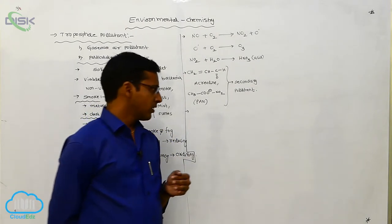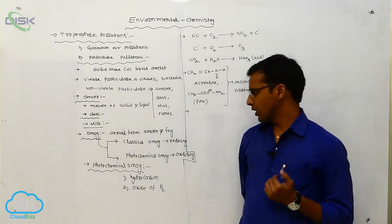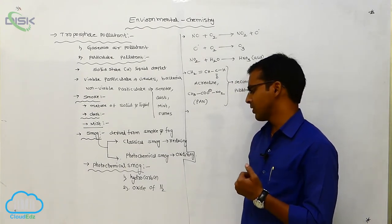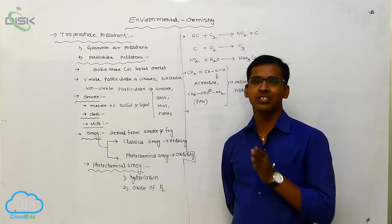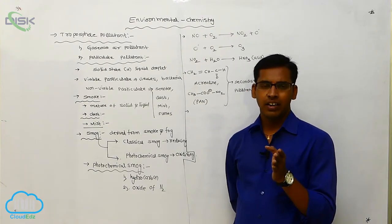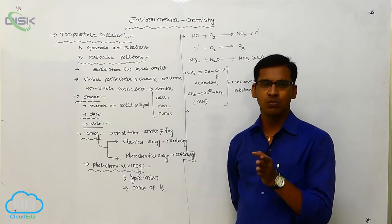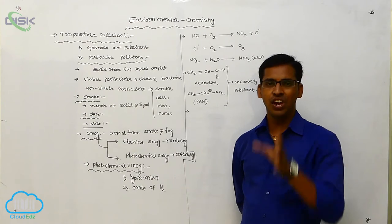And next one, the photochemical smog is produced due to hydrocarbons and oxides of nitrogen. So these oxides of nitrogen undergo a chain reaction or intercorrelation. Nitrogen is reacted with oxygen gives NO, that NO is reacted with oxygen gives NO2, that NO2 is dissolved in water, it gives nitric acid. This is a chain reaction.